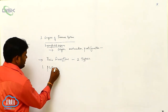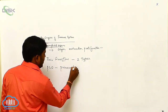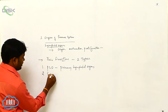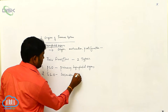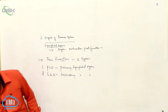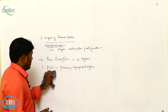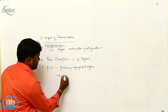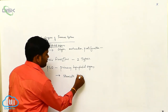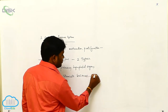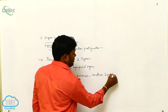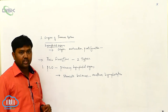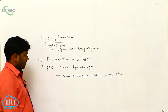The first type is primary lymphoid organs, and the second is secondary lymphoid organs. Primary lymphoid organs are those where stem cells become mature lymphocytes.